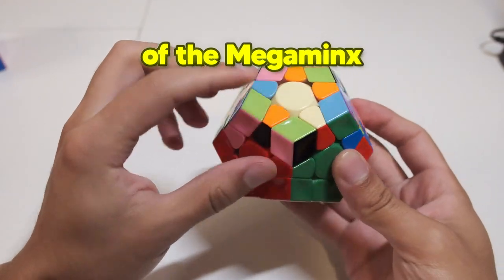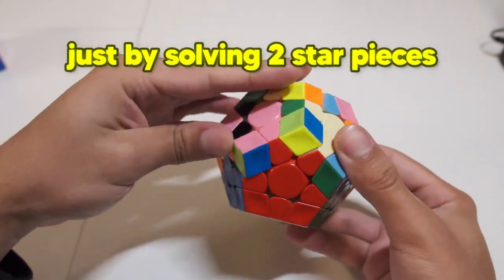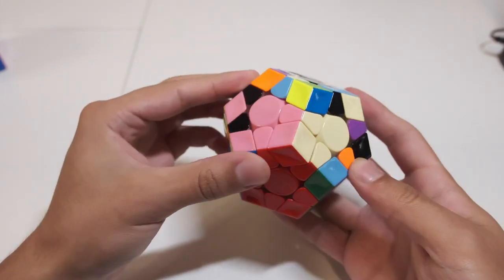The second two-layer step of the Megaminx can be simplified in solving just like F2L on the Rubik's Cube, just by solving two star pieces to create empty slots to solve pairs into, just like this.